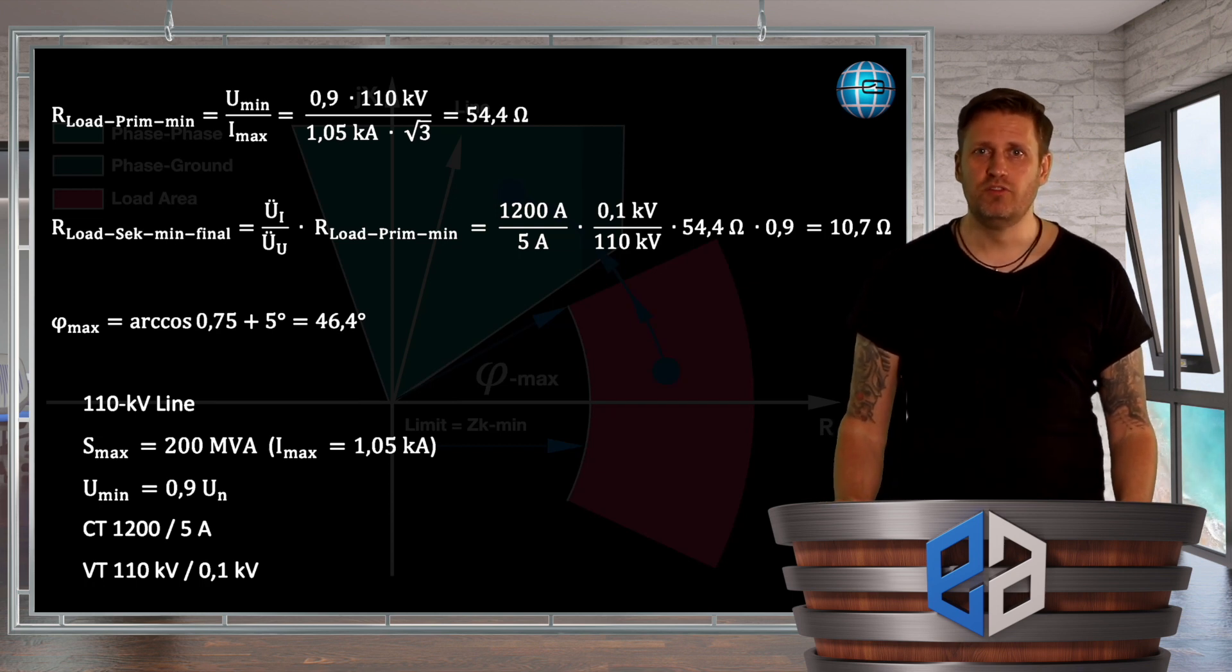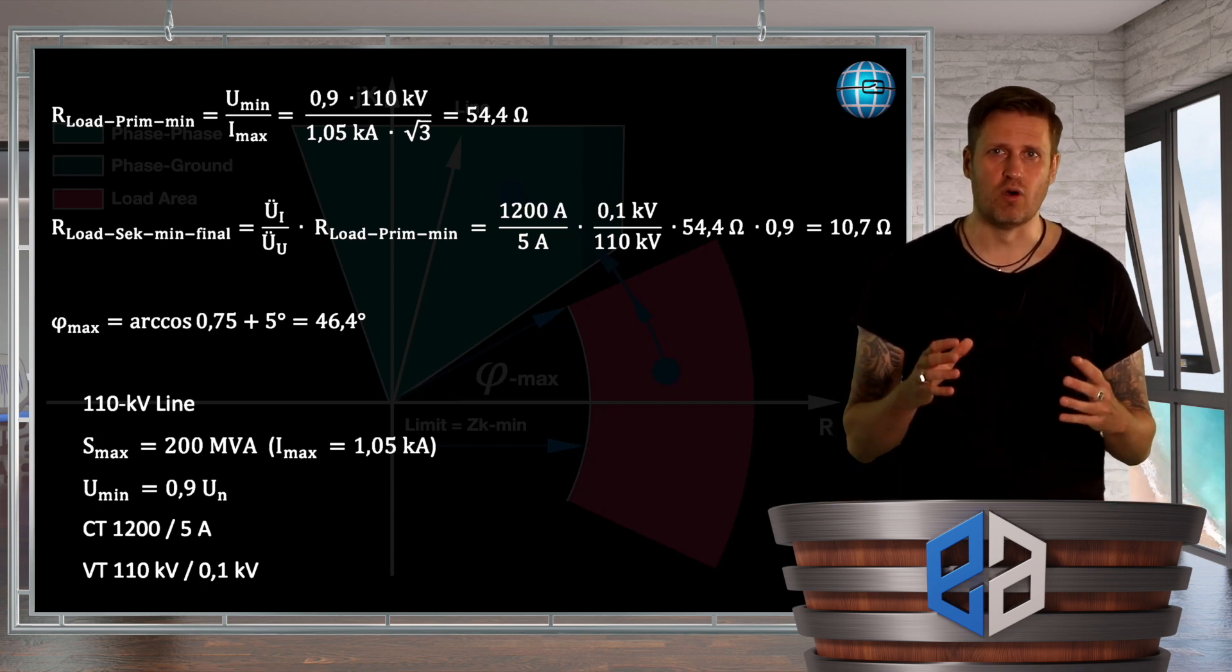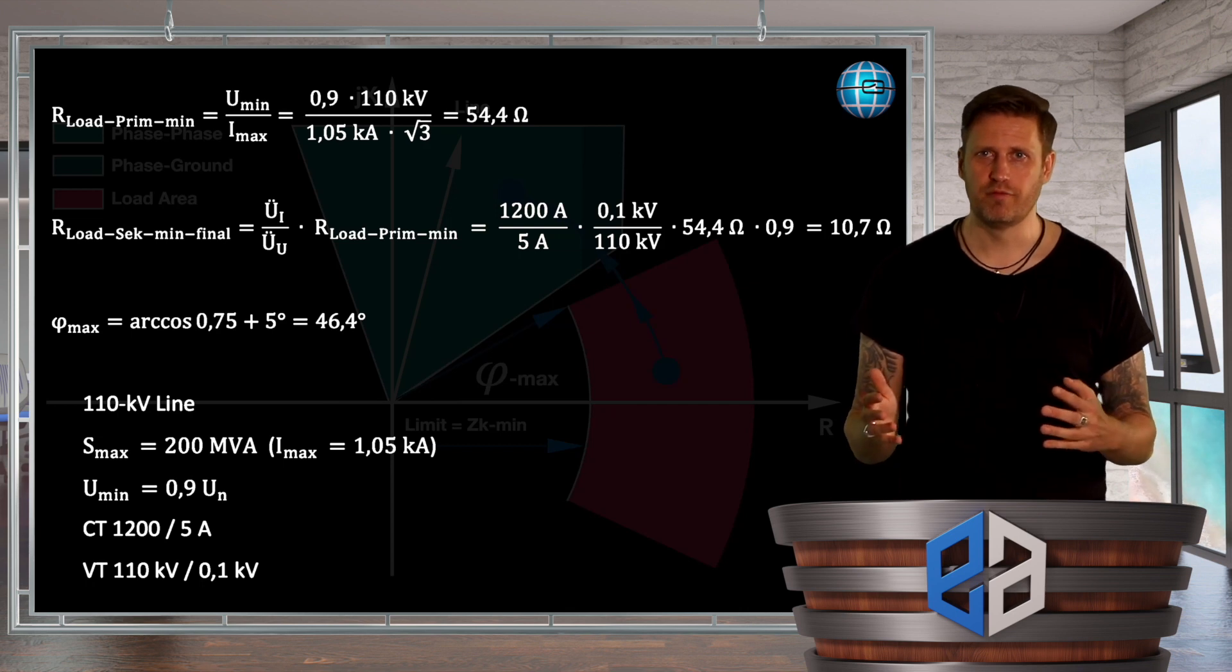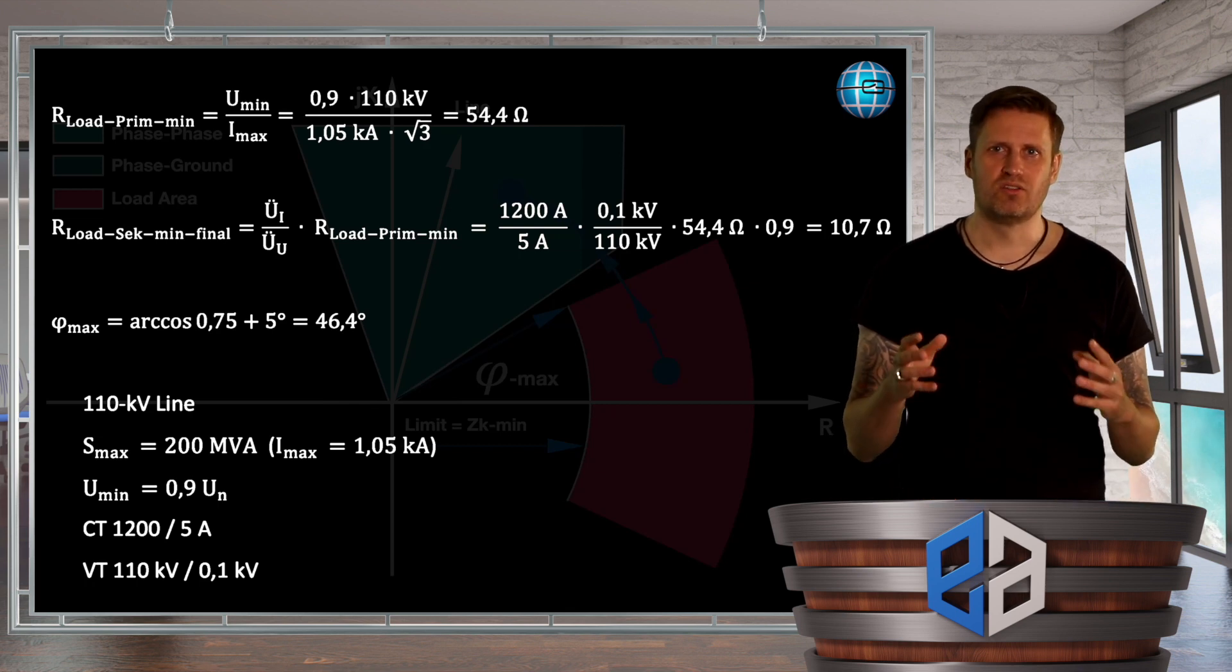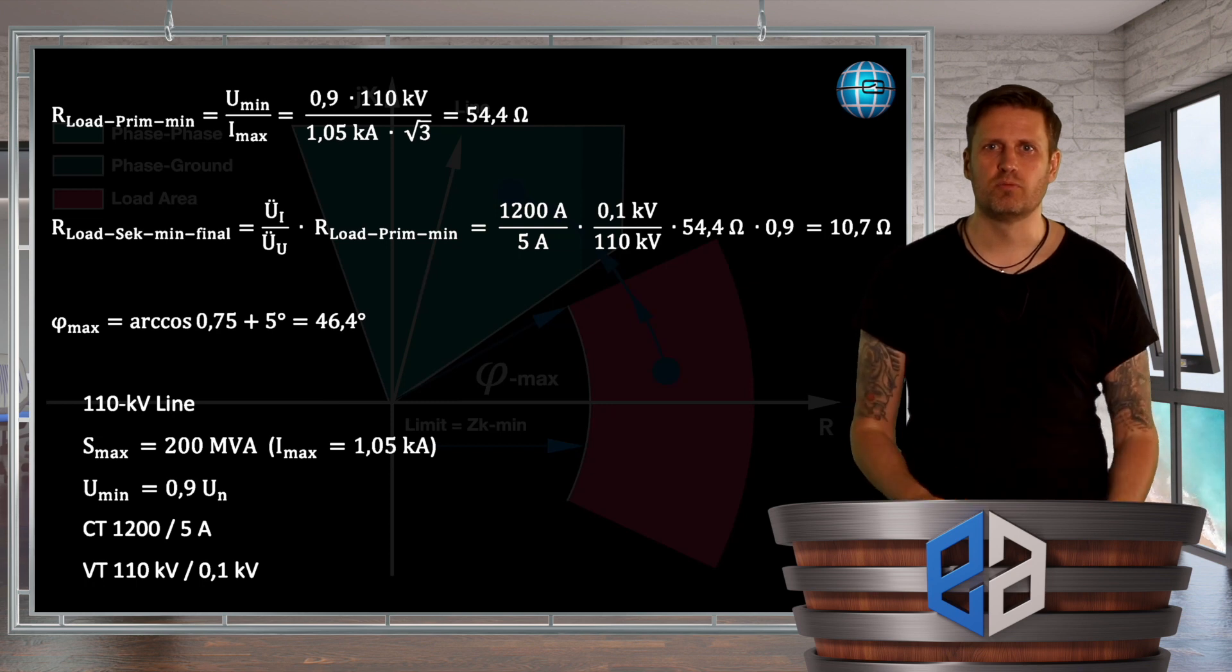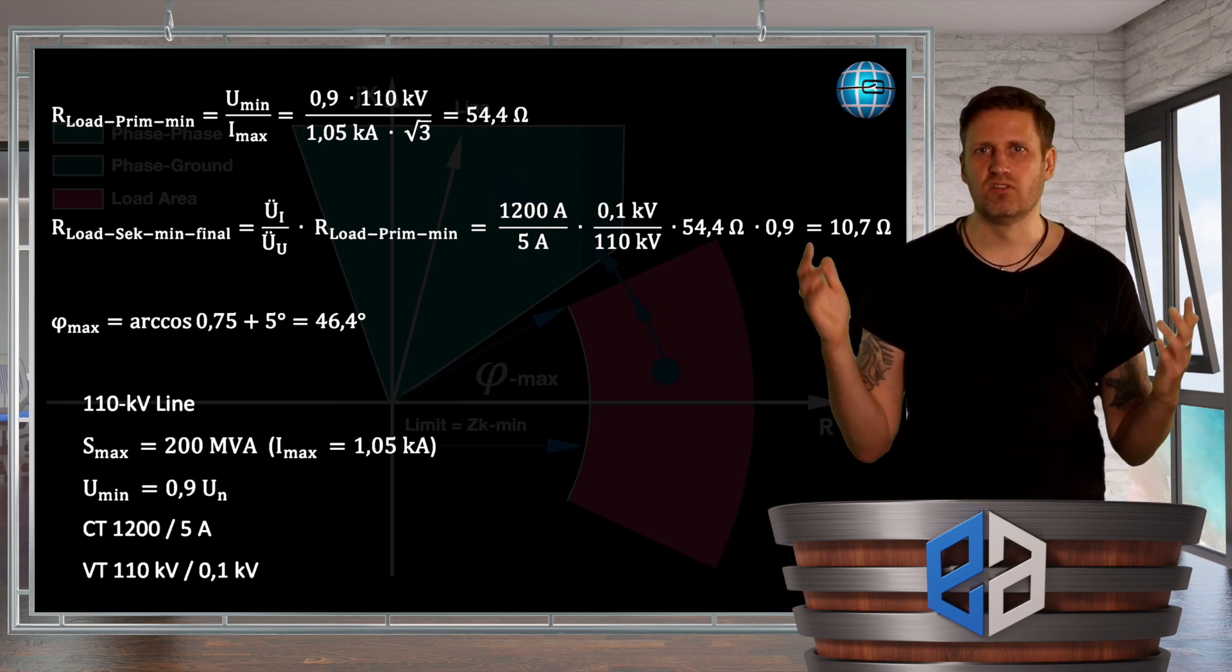We set the angle of the load cutout at a volume increased by 5 degrees from the maximum occurring load angle or accordingly to the minimum power factor. For example, if we assume a minimum cosine phi of 0.75, then the angle to be set is calculated from the arc cosine of 0.75 plus a safety margin of another 5 degrees and results in 46.4 degrees. We can now either set these two volumes directly or adapt them to the vendor specific setting parameters and the load cutout is perfect.